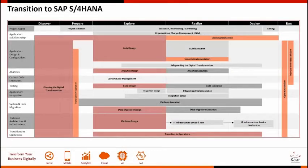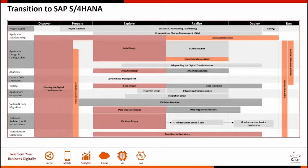How do you go about handling a conversion project? Let's spend the next 10 minutes or so trying to understand how a typical conversion project would look — what are the phases, what are the technical activities, and so on. This primarily follows SAP's Activate methodology. What you see on the screen is the Transition to SAP S/4HANA roadmap, structured as a matrix of project phases on the x-axis and work streams on the y-axis.